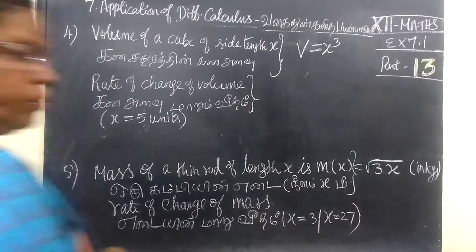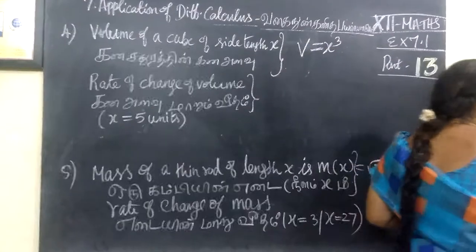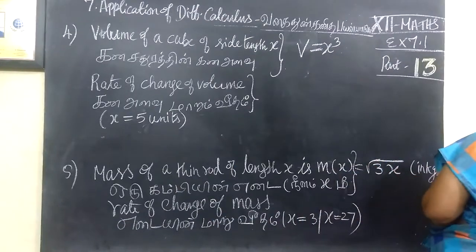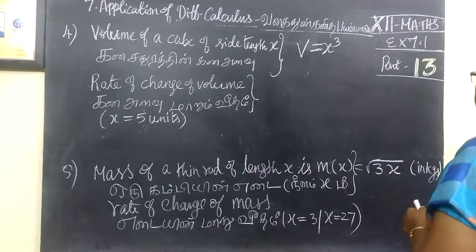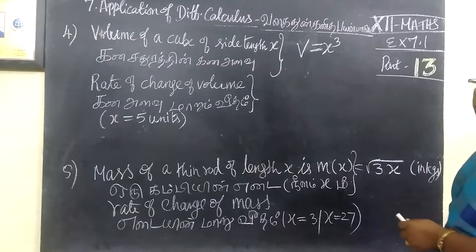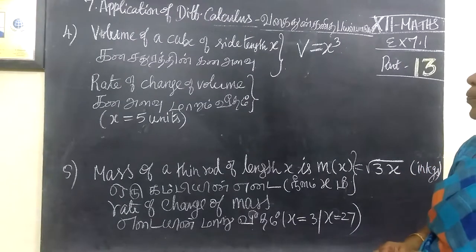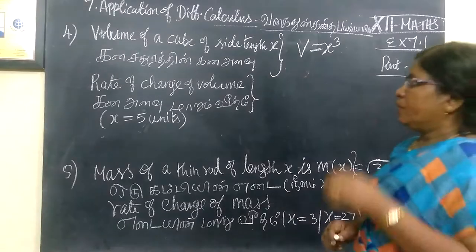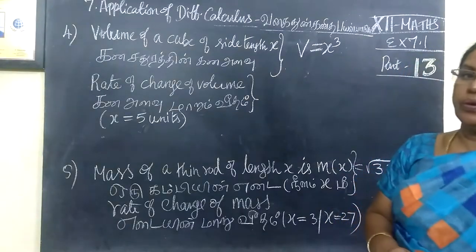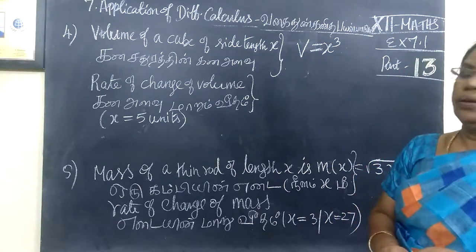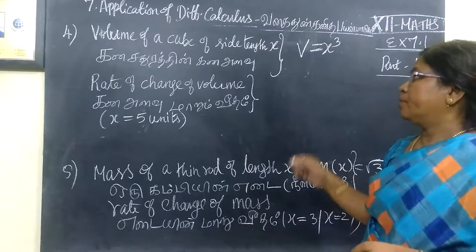What are we going to do? Question number 4, exercise 7.1, class 12 math. We are given the volume of a cube of side x meters.